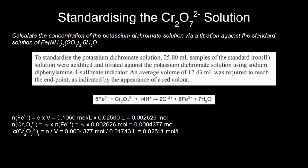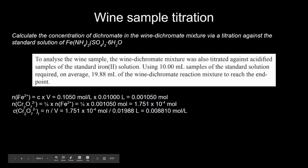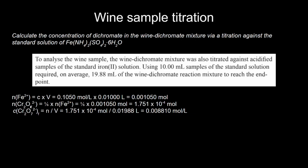Now we are going to use the iron(II) standard solution for one last thing, which is to determine how much dichromate is remaining after it's done its job oxidizing the ethanol. I'm once again plugging in that concentration of iron(II), multiplying it by the volume of iron used in this titration — this time a 10 milliliter aliquot. I'll use the 1 to 6 ratio to convert moles of iron to moles of dichromate, divide by the average titre, and get a final concentration of dichromate — that's what the F stands for.